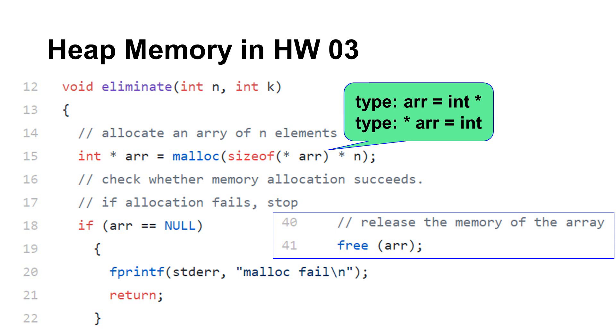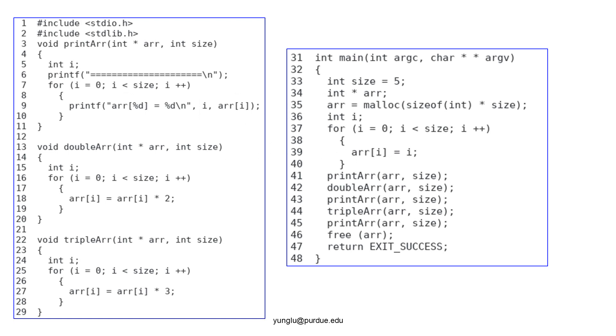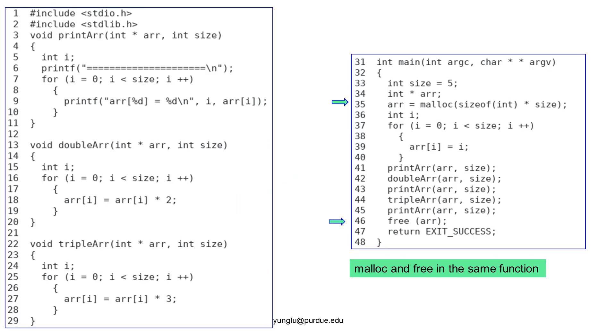The type rule says that when an asterisk is added in front of arr, the type becomes int. Next, let's understand what happens when a piece of heap memory is passed to a function. This is the program. This is the output when we run the program. Let's start from the main function. Line 35 calls malloc to allocate memory. This line allocates memory for 5 integers. As explained earlier, it is a good habit to have malloc and free inside the same function so that we know they appear together. Line 46 calls free to release the memory. Lines 37 to 40 assign 0, 1, 2, 3, and 4 to the array's elements. Lines 41 to 45 call several functions.